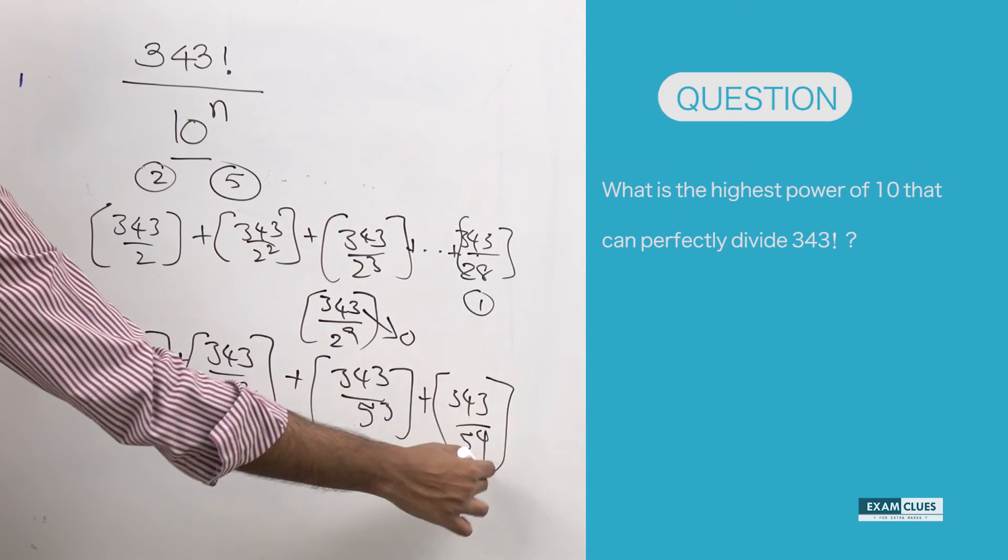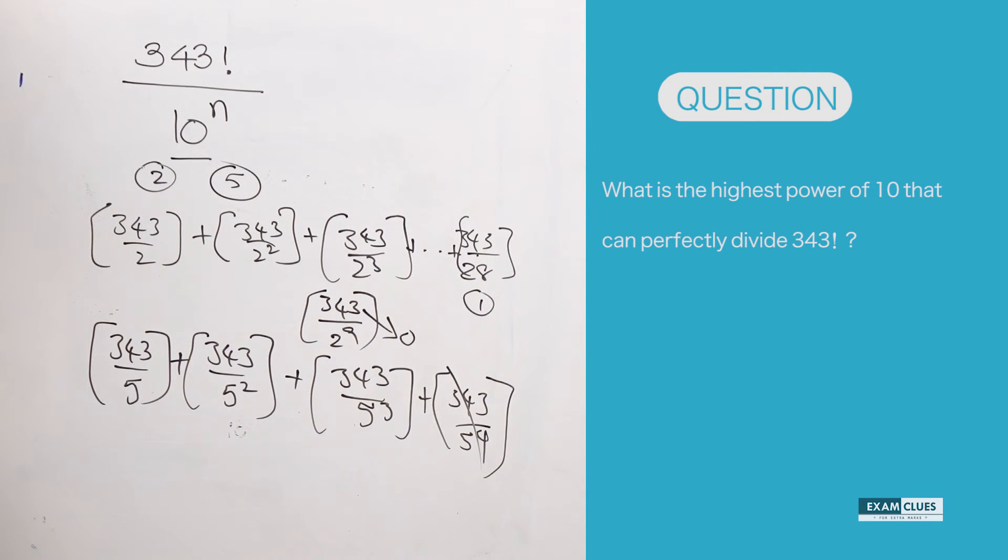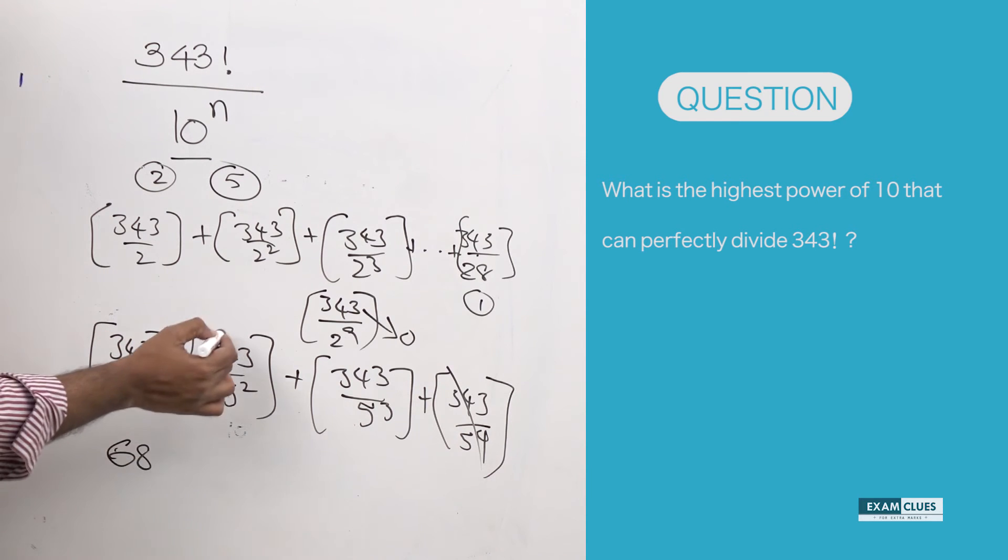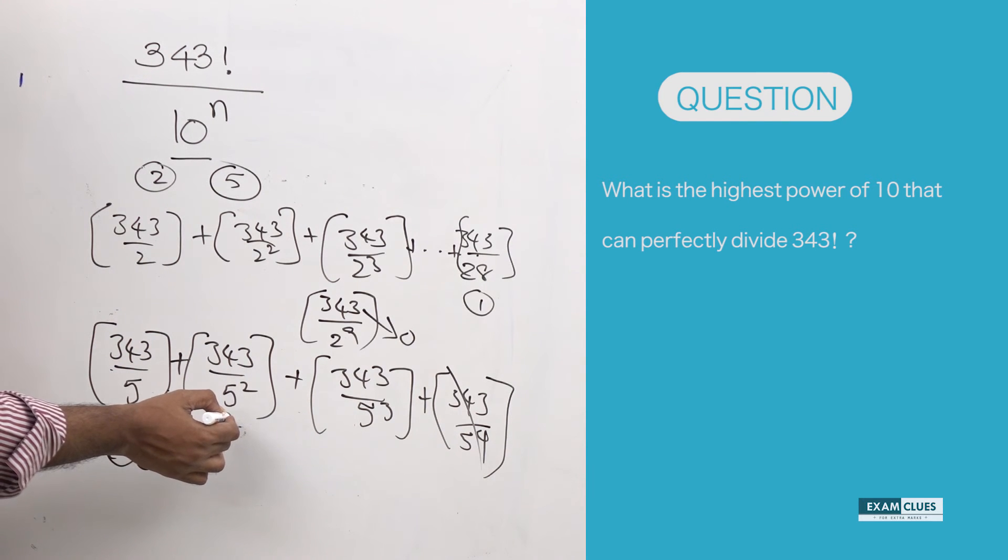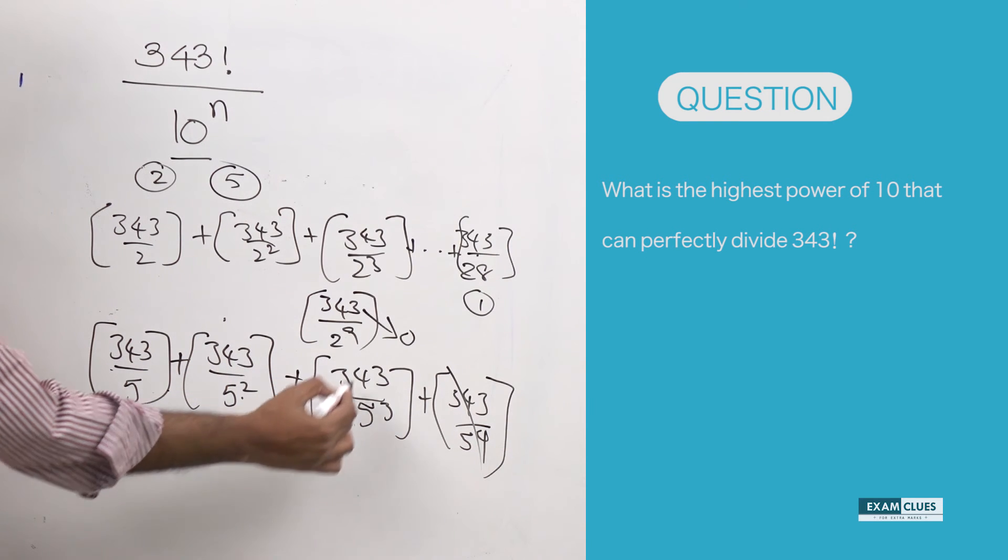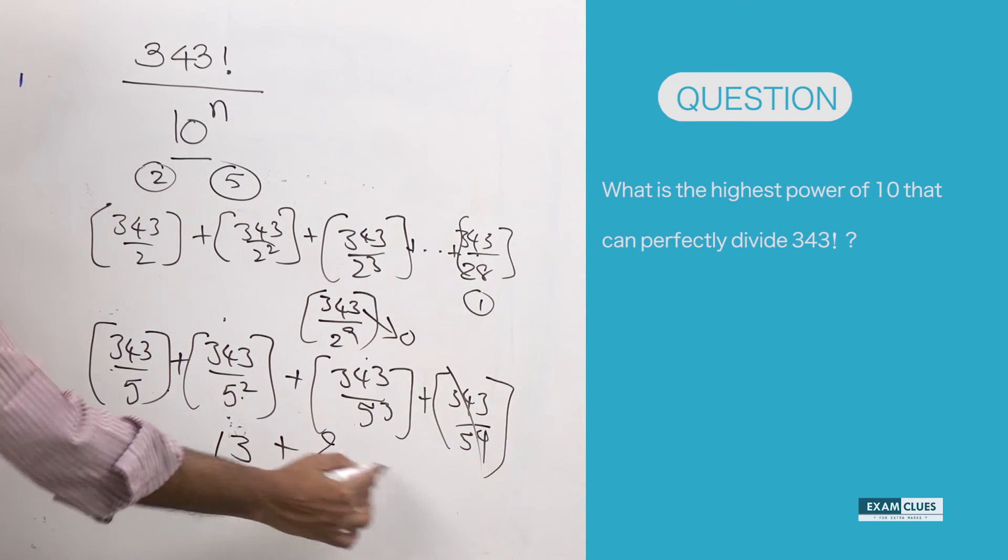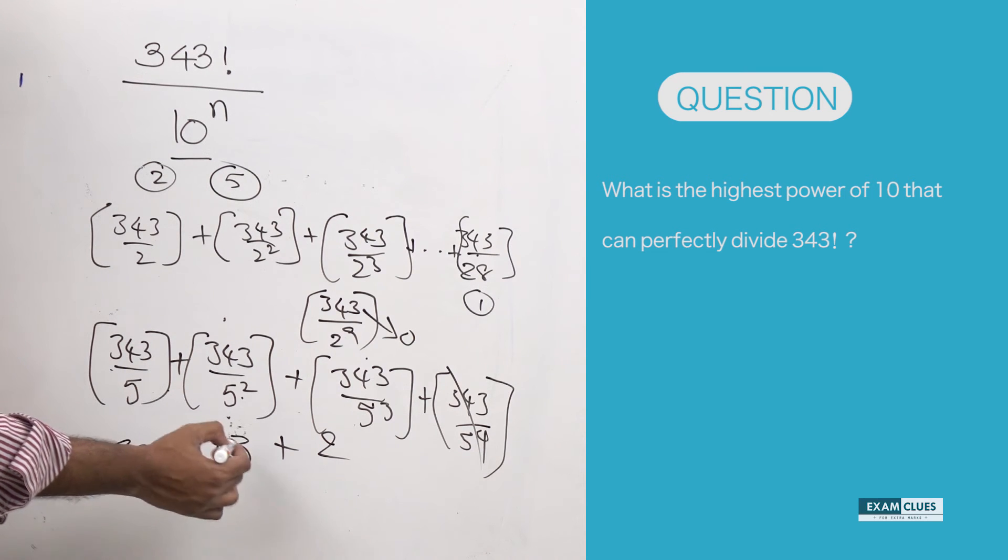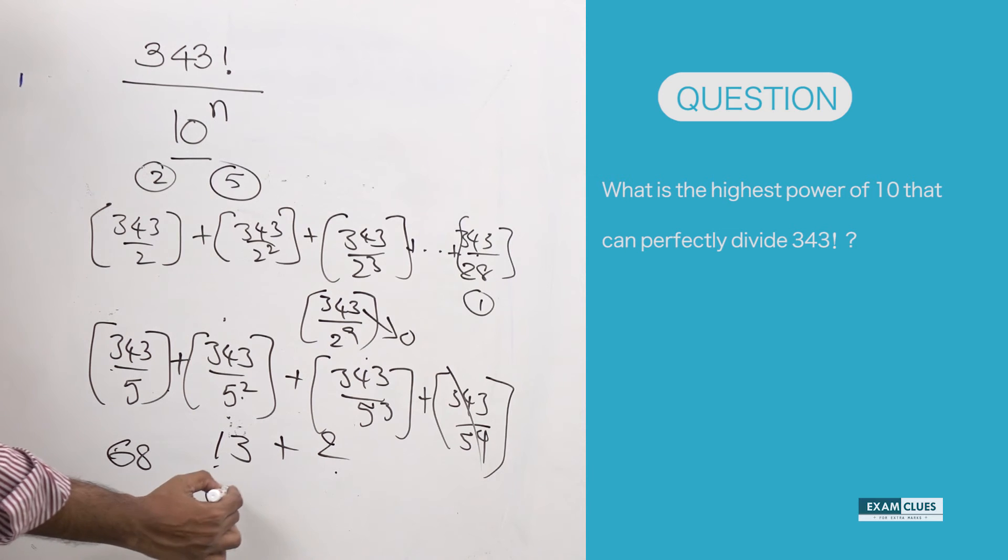If you just check this: this would be 68, then this is nothing but 13—because 25 goes into it 13 times, and the remaining part is anyway a fraction, so leave it. Then this will be 2. So the answer is how much? 68 plus 13 plus 2—that's nothing but 83.